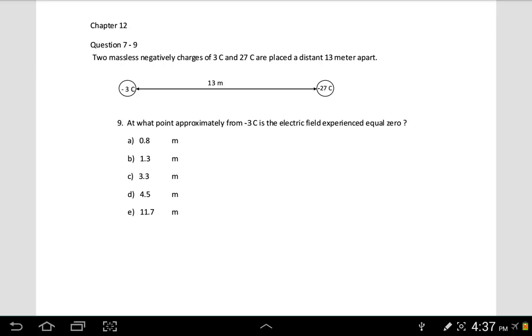Number 9 is saying that two massless negatively charged 3C and negative 27 coulomb are a distance of 13 meters apart. The question says approximately at what point from negative 3C will the experienced electric field be about zero?